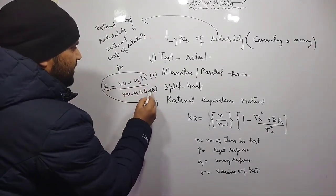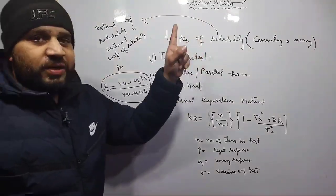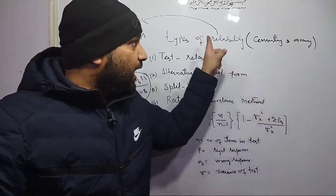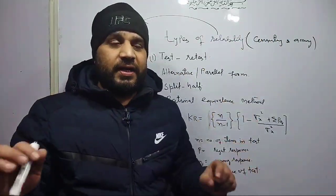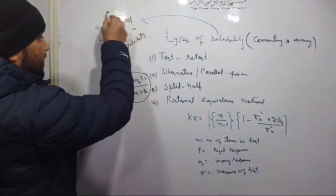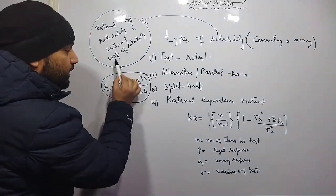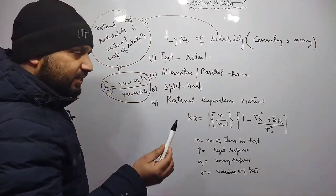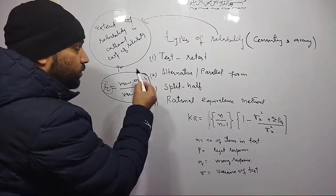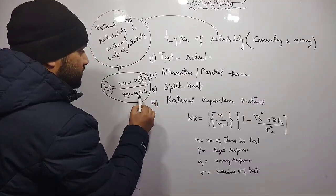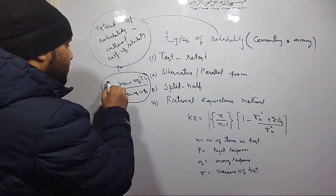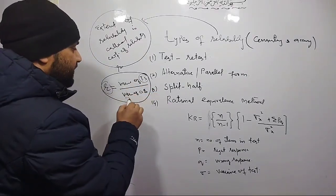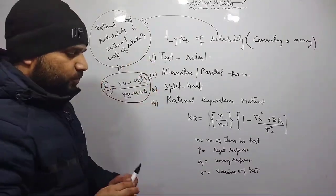The coefficient of reliability r is equal to variance of true score divided by variance of obtained score. So coefficient of reliability means — if your test is consistent, how consistent? If accurate, how accurate? It is denoted by r, and r = variance of true score divided by variance of obtained score. This you have to remember.